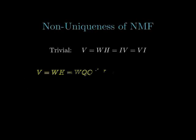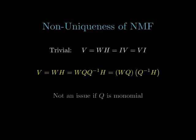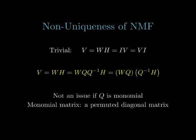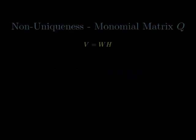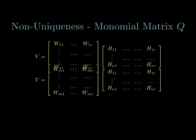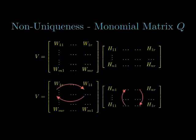However, NMF is not unique. Trivial solutions do exist. Further, if W and H offer a factorization, then WQ and Q inverse H also offer a factorization. This is not an issue if Q is a monomial matrix, i.e. a permuted diagonal matrix, as the rows of W and the columns of H are suitably swapped and scaled in order to obtain the same representation.